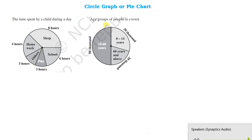Similarly here, in the second one, we have shown the different age group people in a town. Like 0 to 14 years, in the age group of 0 to 14 years, there are 30,000 people. Between 15 to 60 years, there are 50,000 people. And above 60 years, there are 20,000 people.